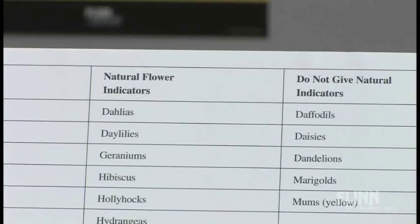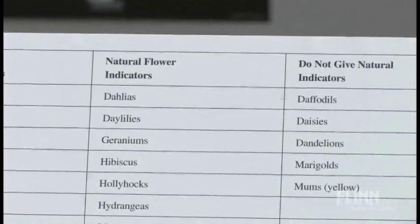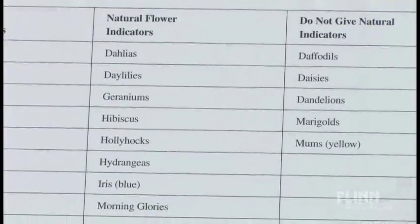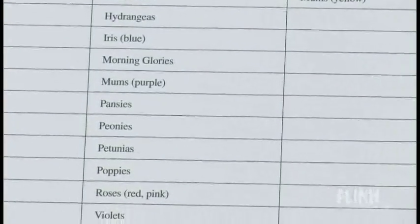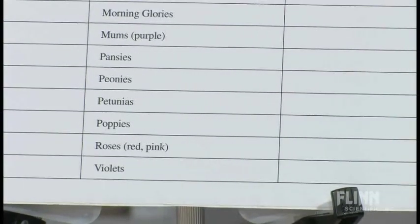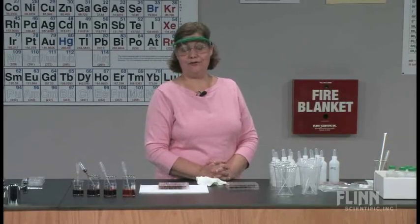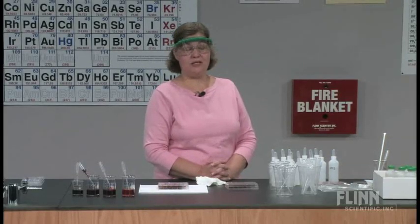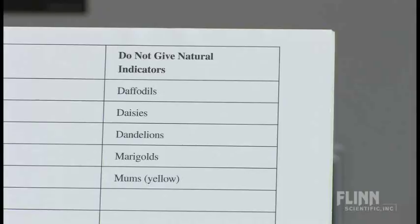Natural flower indicators that gave good acid-base indicators include: daylilies, geranium, hibiscus, hollyhocks, hydrangea, iris (blue iris), morning glories, mums, pansies, peonies, petunias, poppies, red roses, and violets. What fruits, vegetables, or flowers do not give indicators? Basically, anything that's not red or purple — yellow flowers like daffodils, daisies, dandelions, marigolds, and yellow mums do not give natural indicators.